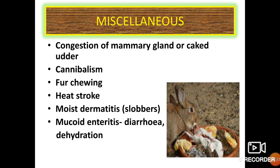Miscellaneous causes include congestion of the mammary gland or caked udder, cannibalism, fur chewing, heat stroke — proper arrangement during summer is very essential to allow pure air inside the rabbit house and shady trees should be planted near and around the farm — moisture dermatitis or slobbers, and mucoid enteritis which involves diarrhea and dehydration.